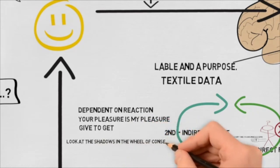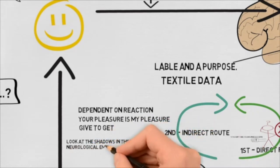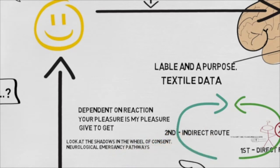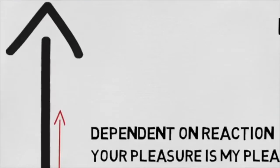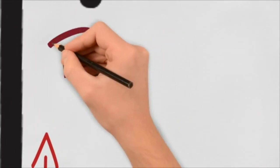It will show up in all other shadows that you can find in the wheel of consent. We call this neurological emergency pathways. Instead of getting turned on, the touched person's nervous system switches into numbness and freeze and is getting turned off.